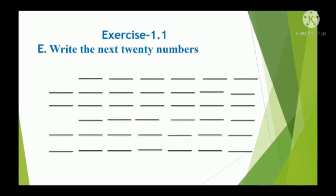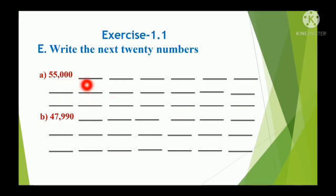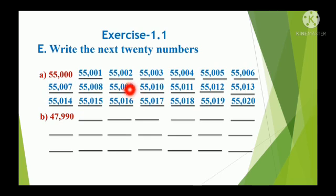Exercise 1.1e: Write the next 20 numbers. Starting from 55,000, we have to write the next 20 numbers. So: 55,001, 55,002, 55,003, 55,004, 55,005, 55,006, 55,007, 55,008, 55,009.